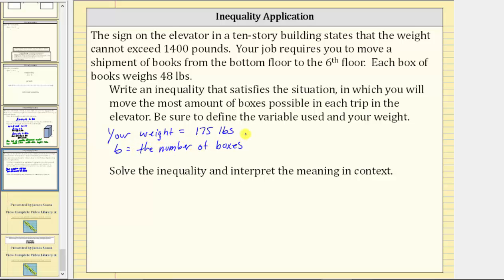And now let's set up the inequality. Your weight, which is 175 pounds, plus the weight of the boxes, which is going to be 48 pounds times the number of boxes, or 48 times b, or plus 48b, cannot exceed 1,400 pounds, which means it can weigh exactly 1,400 pounds or less, which gives us 175 plus 48b less than or equal to 1,400.